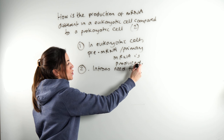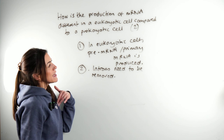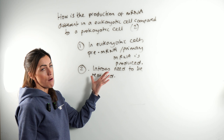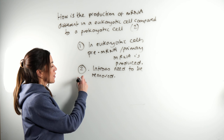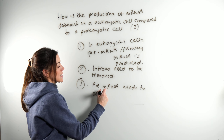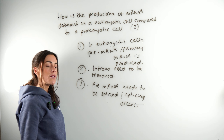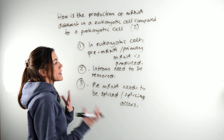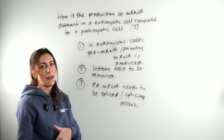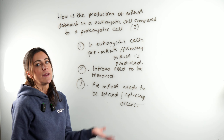Those introns need to be removed. In prokaryotic DNA there are no introns, so the mRNA will not contain any introns and we don't call it pre-mRNA. Another mark you could get: the pre-mRNA needs to be spliced, because splicing is the name for the process of removing those introns. In eukaryotic cells, we make pre-mRNA, which is then spliced to remove the introns, giving us mature messenger RNA. That does not happen in a prokaryotic cell.